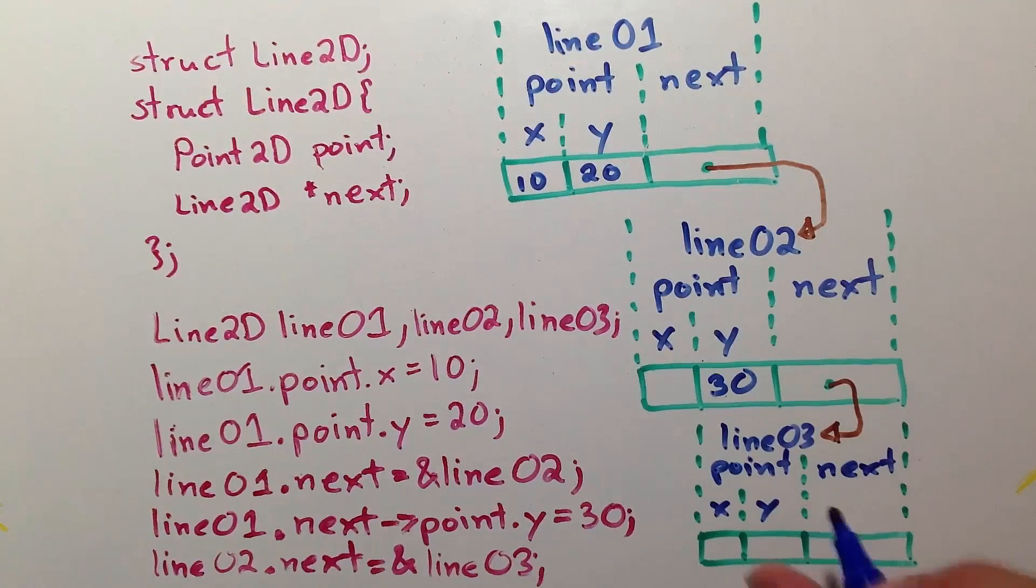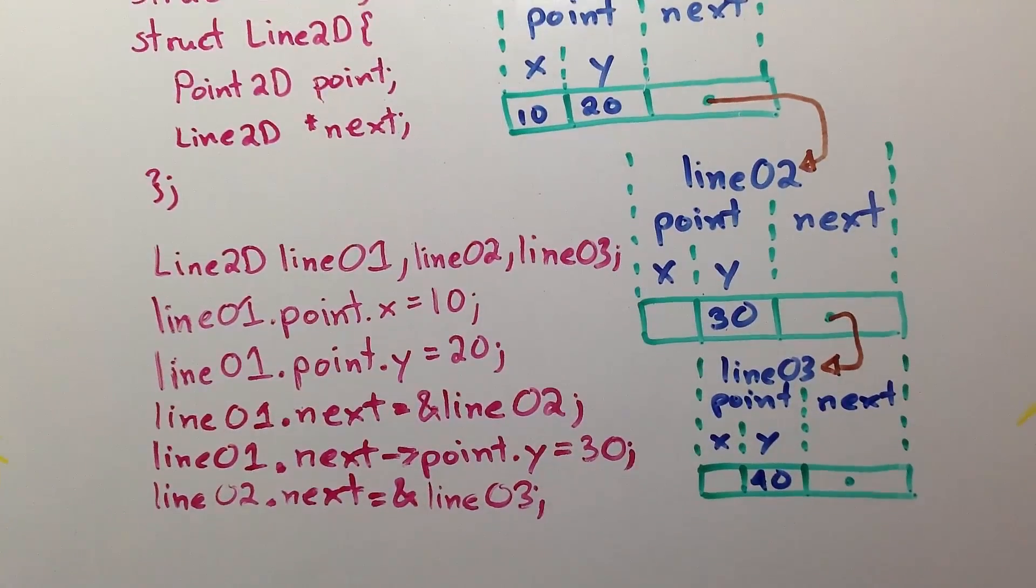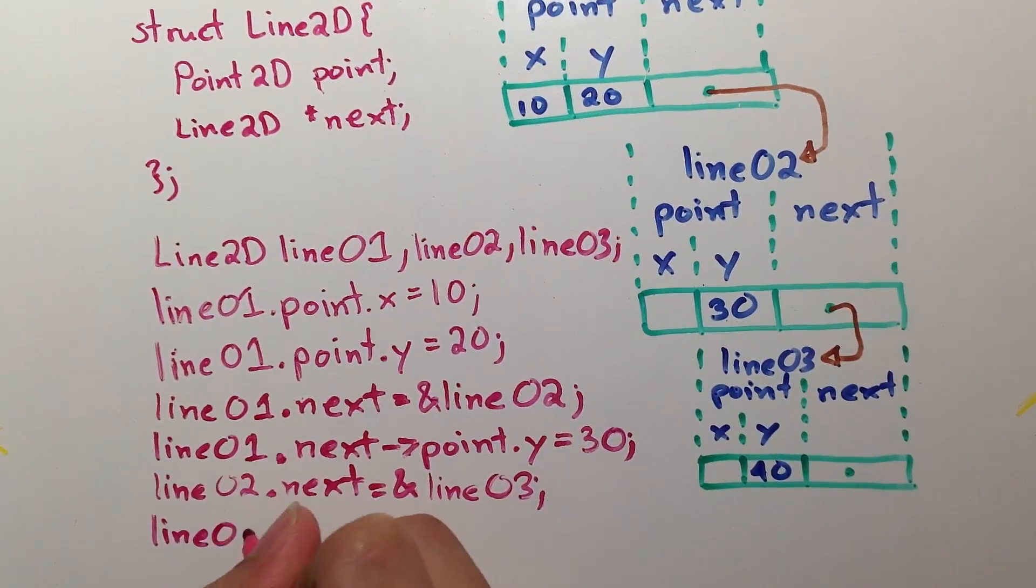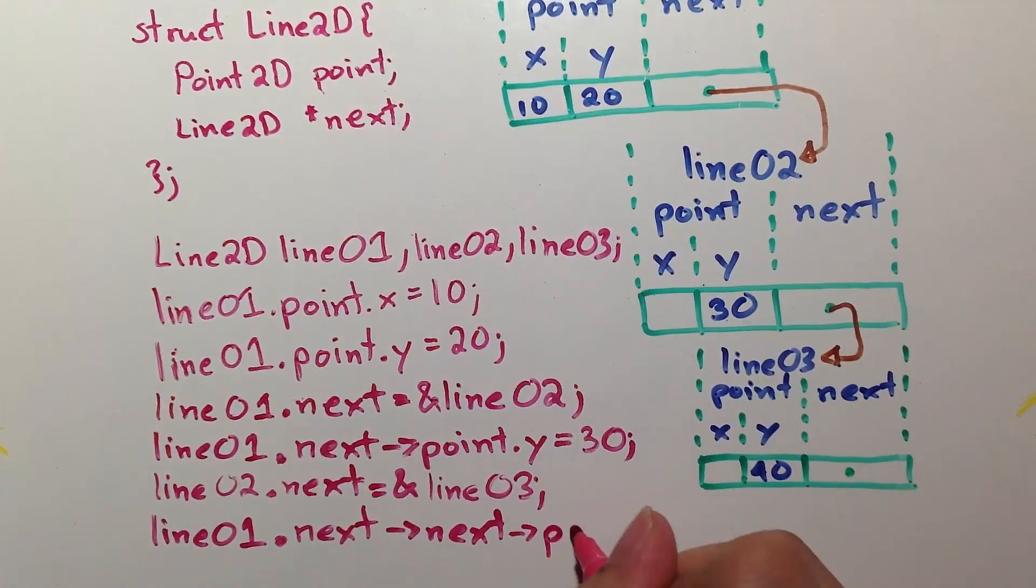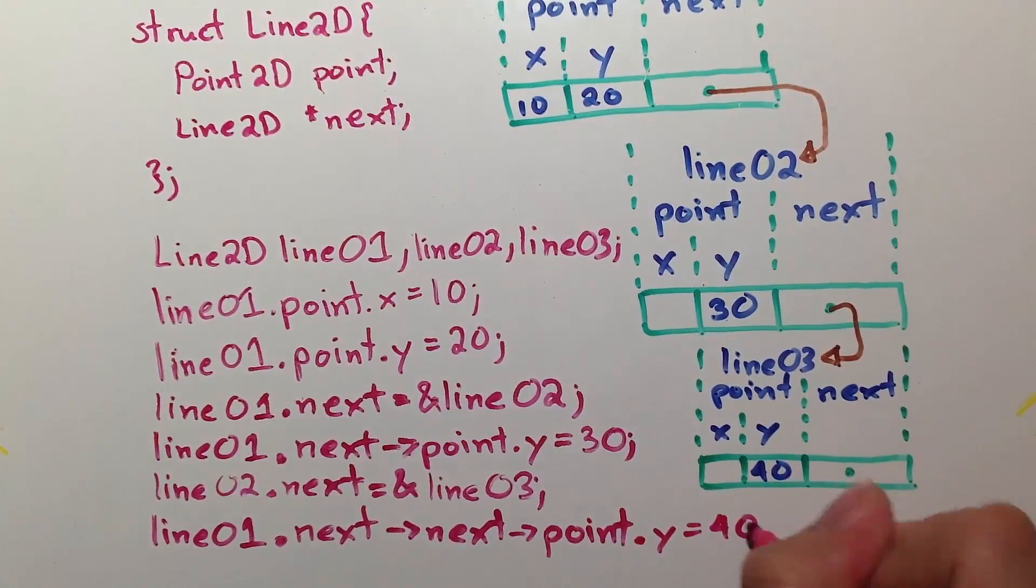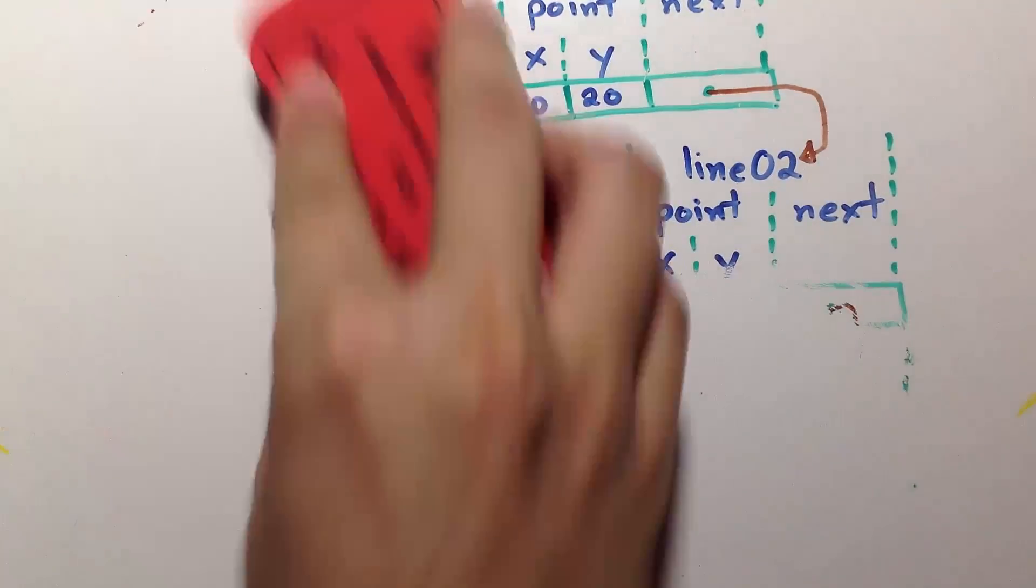For the fun part, let's assign this variable to 40 from line01. Let's no longer use the ugly form and take advantage of the arrows instead. How do we do this? We start from line01 dot next, arrow next, arrow point dot y gets 40. Now, that wasn't so crazy, right? Well, let's move on to our last topic.